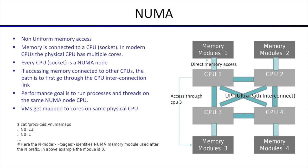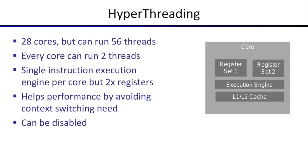In the NUMA maps output, entries show n0, n1, etc., where the number after 'n' indicates the NUMA node being used. In the example shown, all process threads are using node zero, meaning all memory is linked to NUMA module zero.